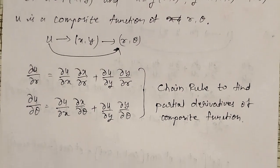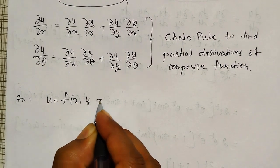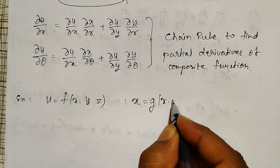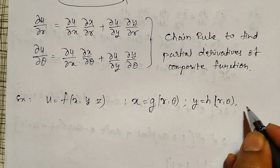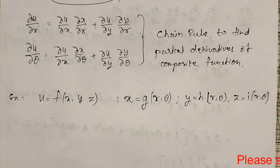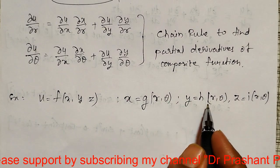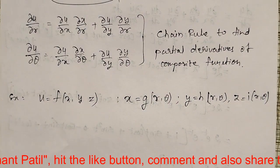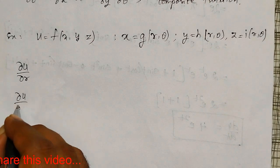Sometimes what may happen is u may be depending on three variables: u = f(x, y, z), and x, y, z are functions of r and θ. Then how do we apply the chain rule? Since u is a function of x, y, z and x, y, z are functions of r and θ, u is indirectly a function of r and θ, and therefore only two partial derivatives ∂u/∂r and ∂u/∂θ will exist.